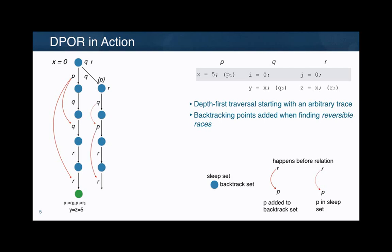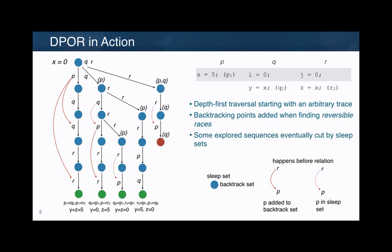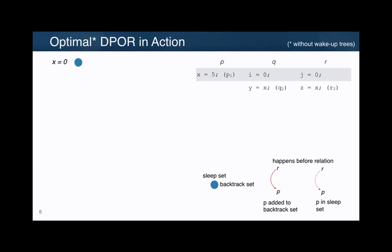At the end, this algorithm — the original one from 2005 — is able to explore these four different traces with four different partial orders of dependent events. But this is not optimal, because it is exploring partial traces until it finds out there is no need to continue. In general, there will be some explored sequences eventually cut by so-called sleep sets.